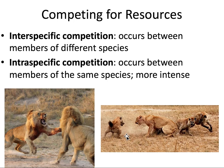On the right-hand side, you see what is known as interspecific competition, and this occurs between members of different species. You see the hyenas and the lions — they are in a brawl over some kind of resource that they are not looking to share. So this would be an example of interspecific competition.